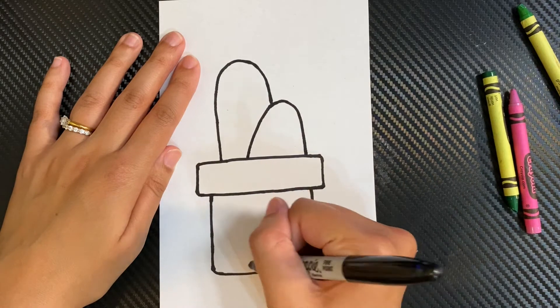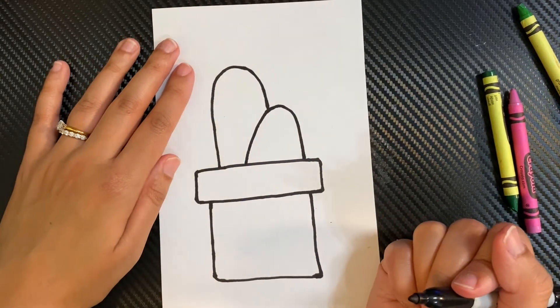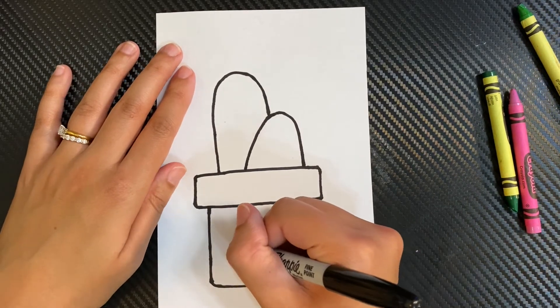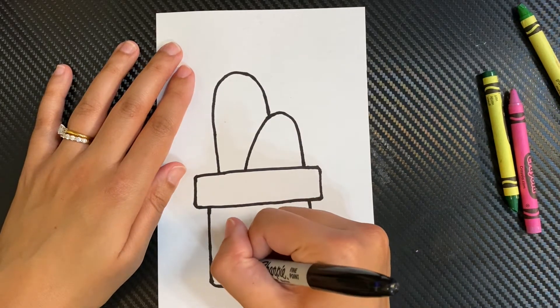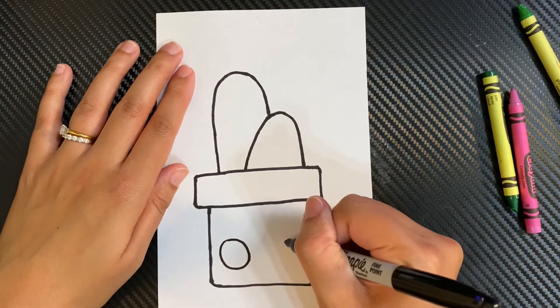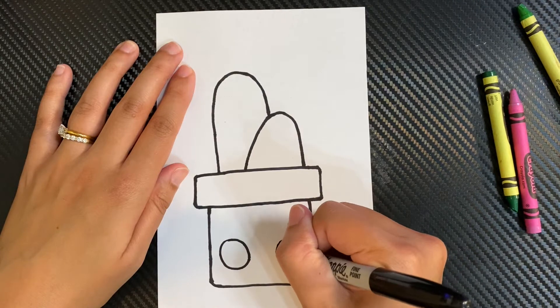Now we're going to draw the face of our cactus. So the face has two circles. One big one here. We're going to draw another one about the same size as the first one.